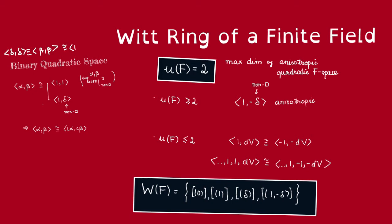And if alpha and beta, exactly one of them is square and exactly one is non-square, then they are isometric to this, where delta here is a non-square.